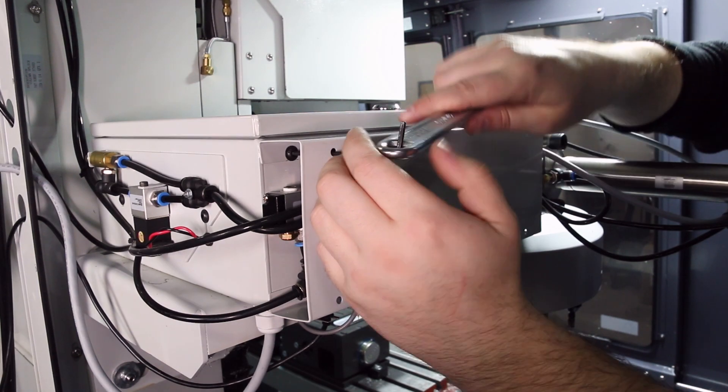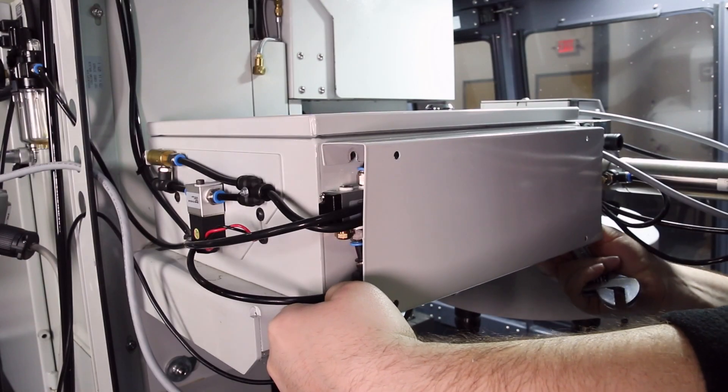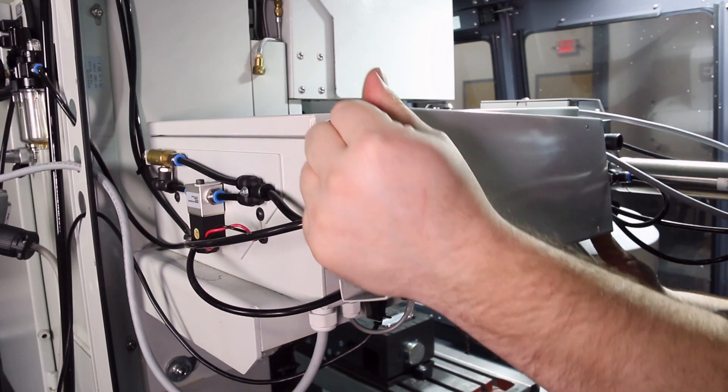To access the solenoids, remove the ATC side cover by loosening the hex screws through the holes and then sliding the cover off.